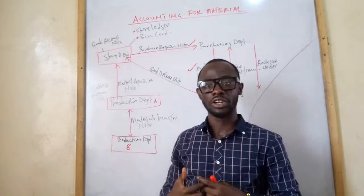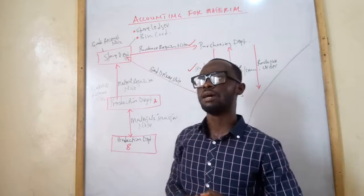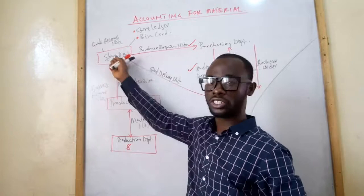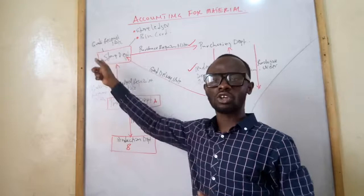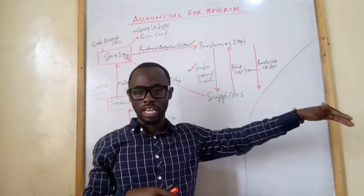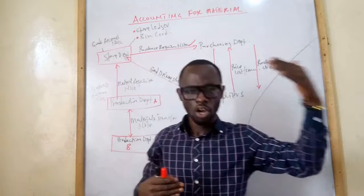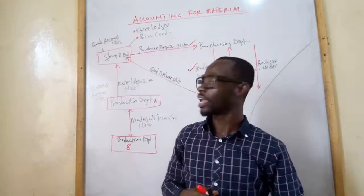Sometimes the supplier may make mistakes and include goods that were not part of the purchase order. In that case, the storekeeper prepares a goods return note, also called a goods rejection note, detailing the quantity of goods not accepted or not part of the purchase order, which will be returned to the supplier. This is usually a rare case.